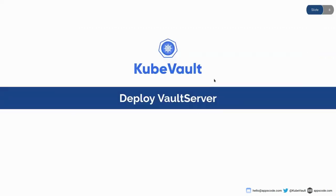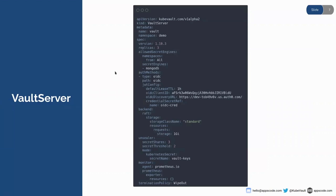I'm going to deploy the vault server, but before doing that let's take a look at the vault server YAML. We recently updated our API version to v1alpha2, with major reworks on our APIs and internal setups of secrets and credential references. If you're still using v1alpha1, it's recommended that you update your operator to v1alpha2. In the spec section I've provided the name and namespace, using the latest version 1.10.3, deploying three replicas. In the allowSecretEngine field I'm allowing all namespaces, but restricting secret engines to only MongoDB.